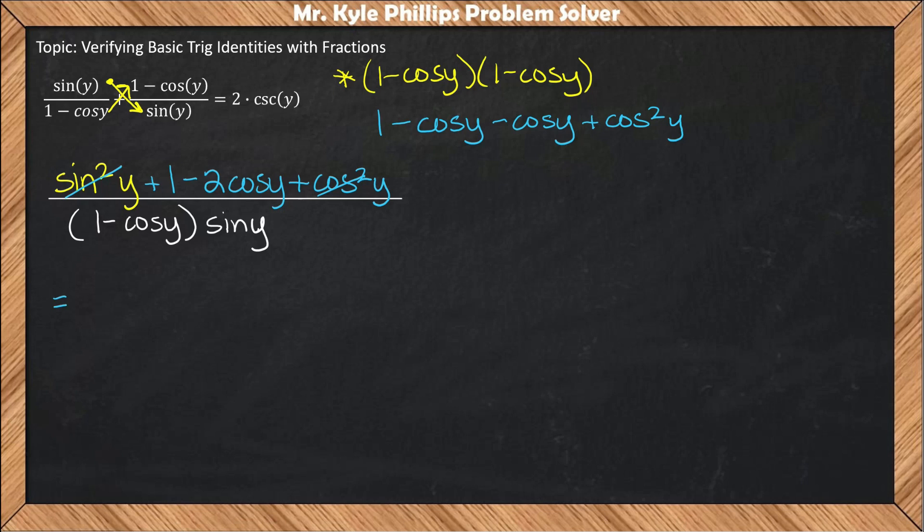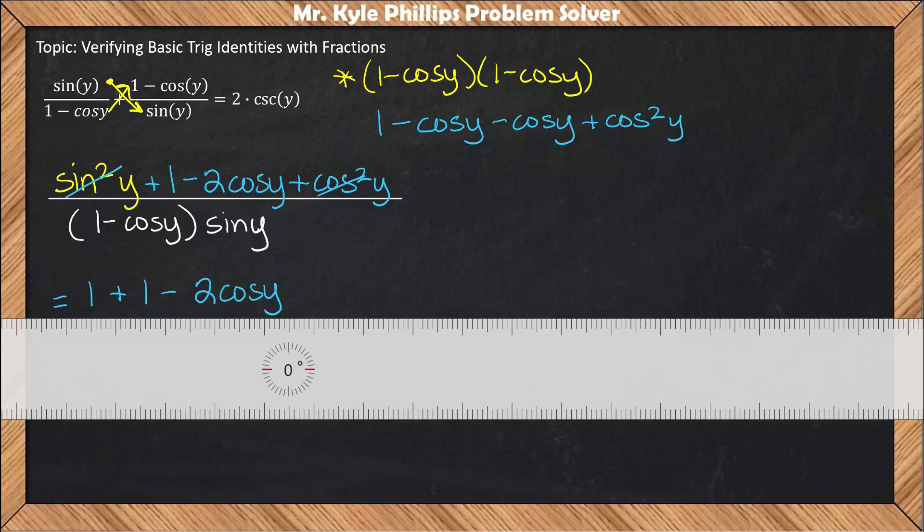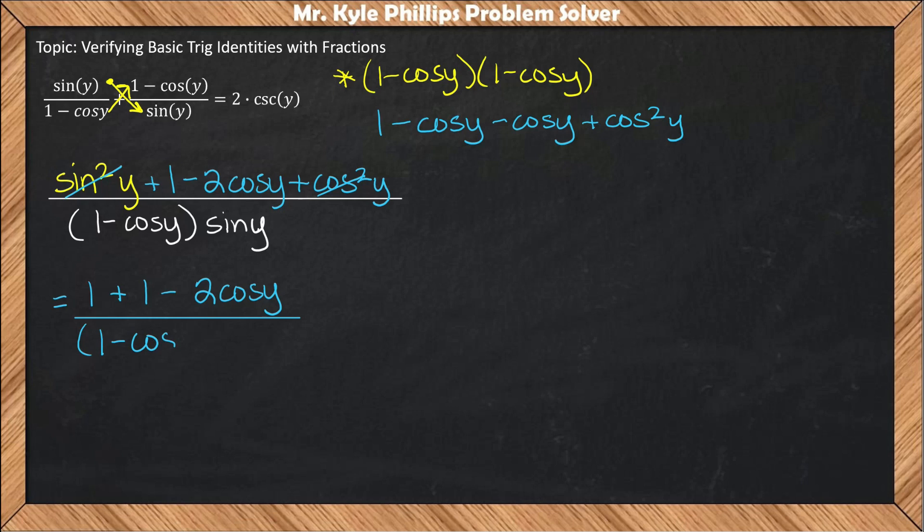So I can cross out this sine squared and this cosine squared and replace it with the number 1. Then I'll write what's remaining in the numerator, which is 1 minus 2 cosine y, all over our denominator of 1 minus cosine y times sine y.